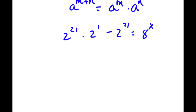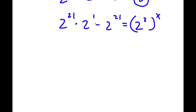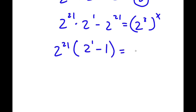And now, 8 is the same thing as 2 to the power of 3. So now I have 2 to the power of 21 times 2 to the power of 1 minus 2 to the power of 21 is equal to 2 to the power of 3 to the power of x. Now, from my left-hand side, if I factor out 2 to the power of 21, I get 2 to the power of 21 times 2 to the power of 1 minus 1. This is still equal to 2 to the power of 3 to the power of x.